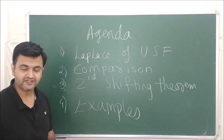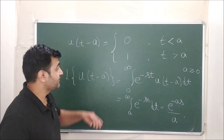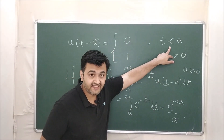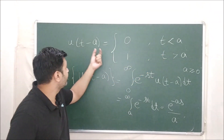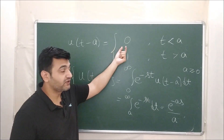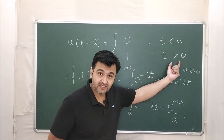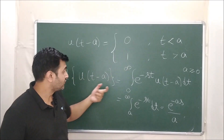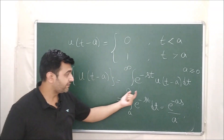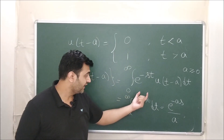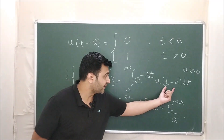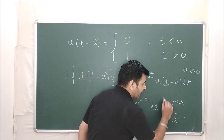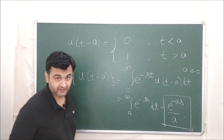Let's see what is the Laplace of a unit step function. In our previous lecture we saw that the unit step function is defined as 0 whenever t is less than a — that means whenever the input is negative the output is 0 — and 1 whenever t is bigger than a. If you apply the definition, ultimately for t bigger than a you get e raised to minus as upon a. So this is the Laplace of a unit step function.